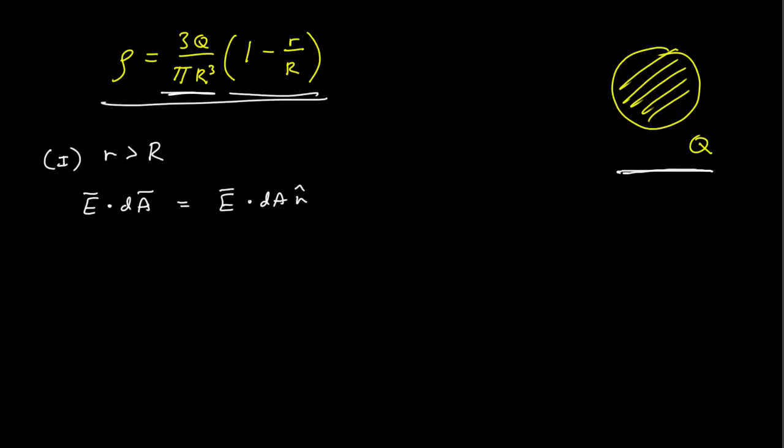For a Gaussian surface, dA n hat. The Gaussian surface we want to use is going to utilize the symmetry of the system. So we have this spherical symmetry, so we're going to choose a Gaussian surface that's a spherical shell of radius r that's centered on the same origin of the charge distribution. So our Gaussian surface contains the same symmetry as our charge distribution.